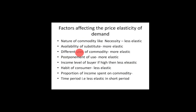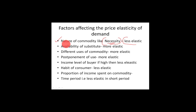Now there are factors that affect the elasticity of demand. First is the nature of the commodity. If you have necessity items — as we studied — even if the price increases you will still purchase them, so they are known as less elastic. Second is the availability of substitutes. If you have a substitute available, for example tea — if the price of tea increases, you will shift to coffee. That means there is variation in demand, so it is more elastic.